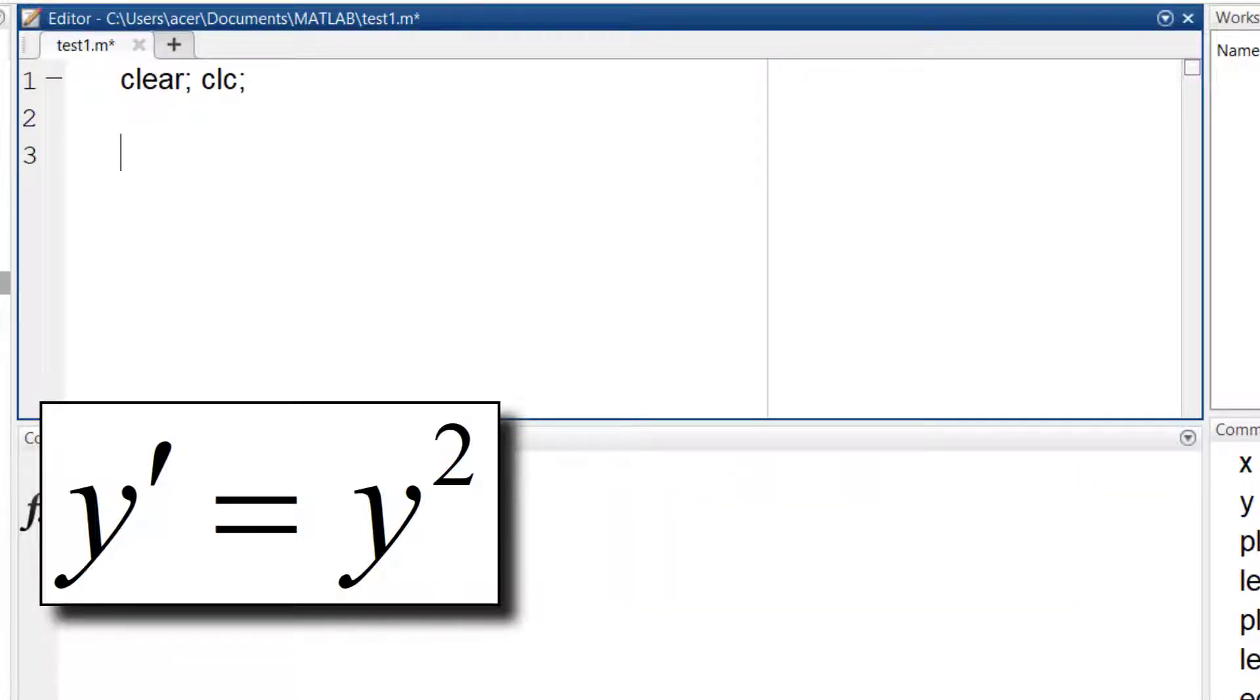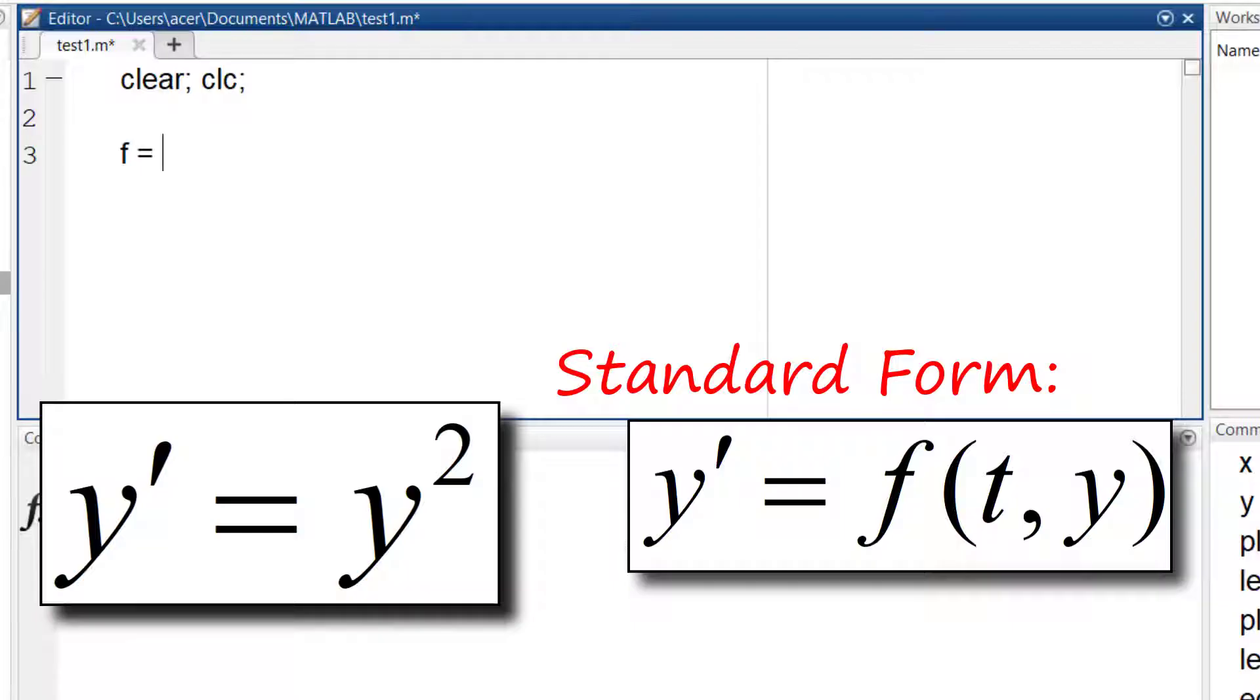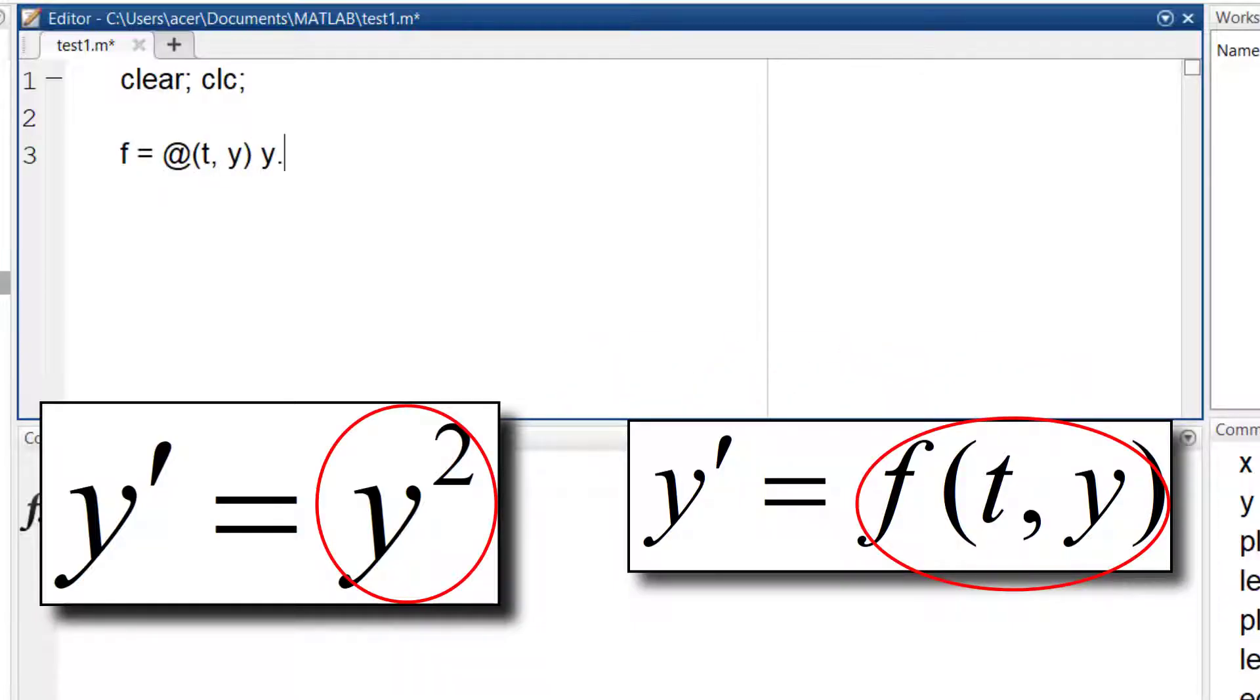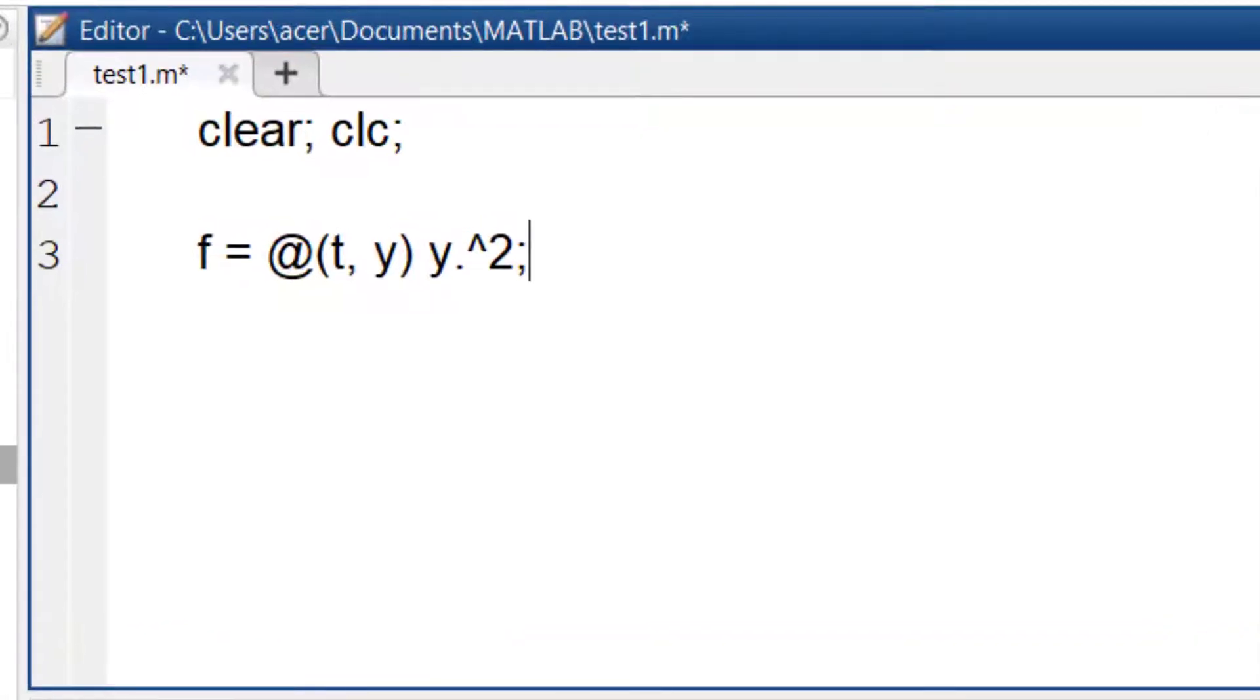The equation is already in the standard form. Now we should define this function f. For this simple case, I define it as an anonymous function. But for more complex ones, you should define it in a separate M file. To know more about the topic, you can check my tutorial about defining functions.